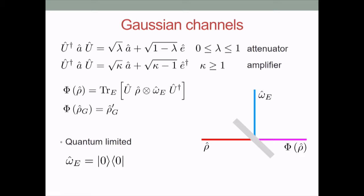Why are these called Gaussian channels? The answer is simple: they preserve the set of Gaussian quantum states. So if the input is a Gaussian quantum state, also the output will be a Gaussian quantum state, of course with a different temperature. If the environmental state is the vacuum, then the channel is called quantum limited — giving us a quantum limited attenuator and a quantum limited amplifier. These two channels are important because they are the building blocks of all Gaussian quantum channels: any Gaussian quantum channel can be expressed as an attenuator composed with an amplifier.